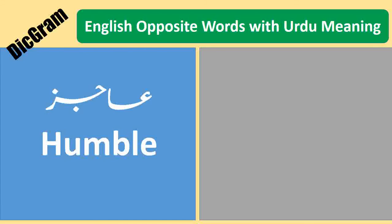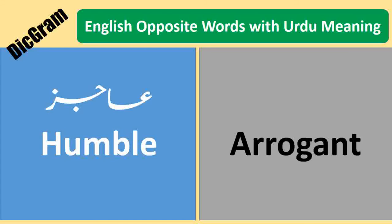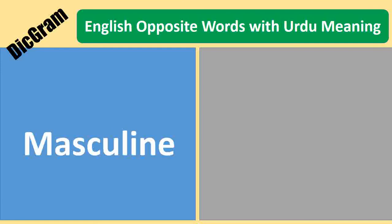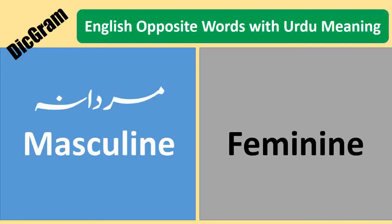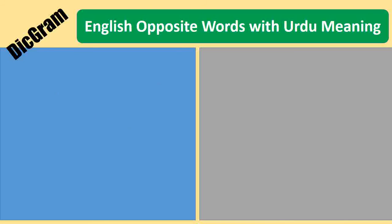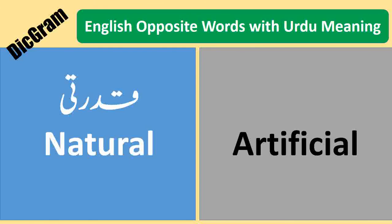Humble — Agus. Arrogant — Magroor. Masculine — Mardana. Feminine — Zanana. Natural — Kudrati. Artificial — Maslui.